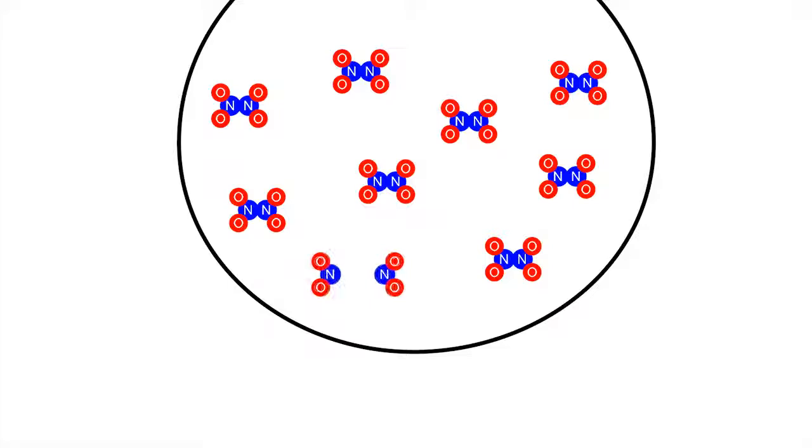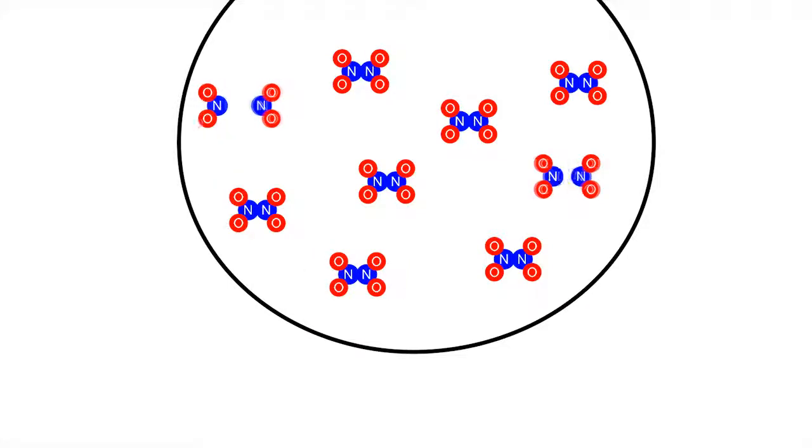So although at equilibrium the bulk of NO2 has been converted into N2O4, the equilibrium mixture still contains a significant amount of NO2.